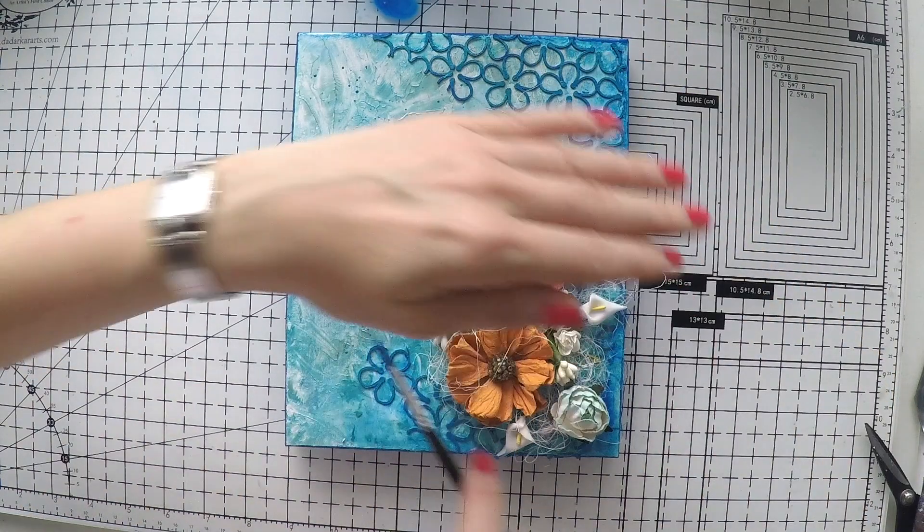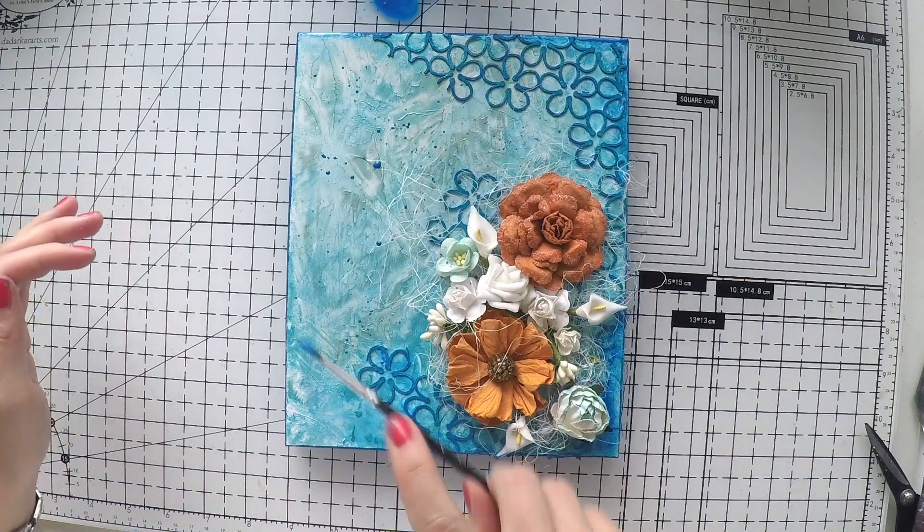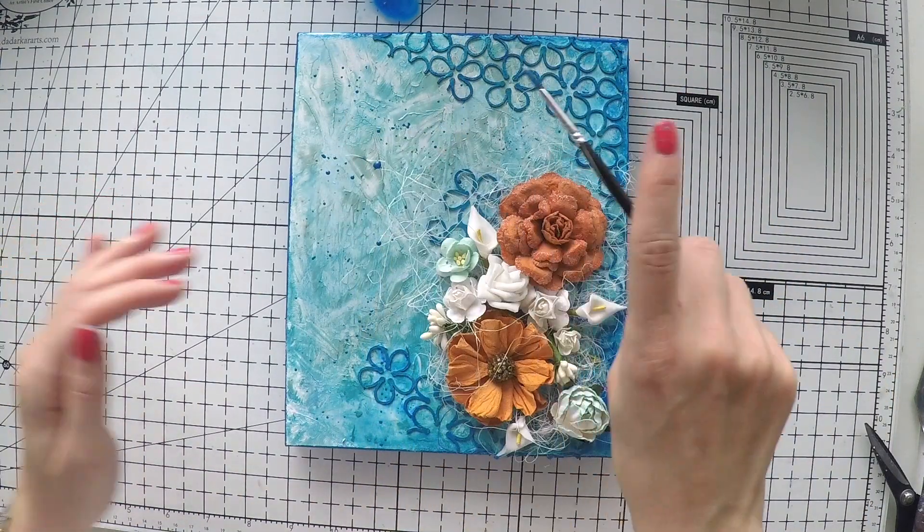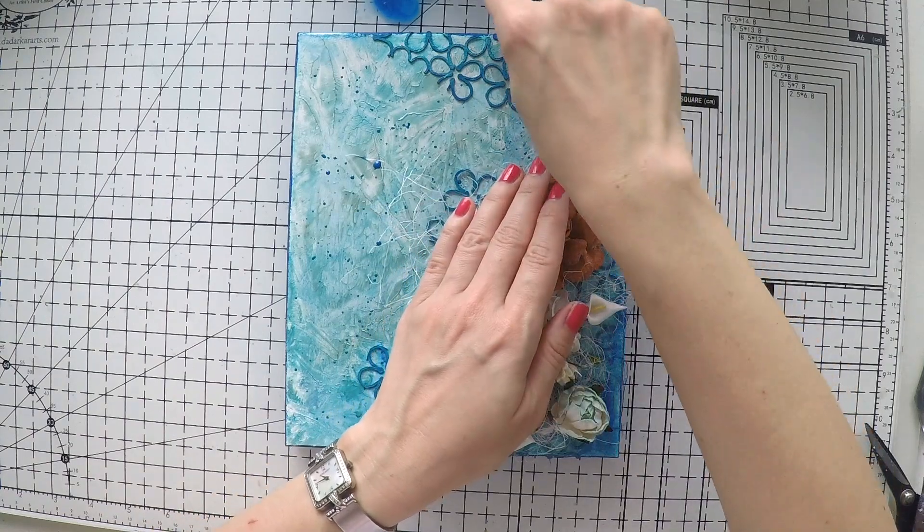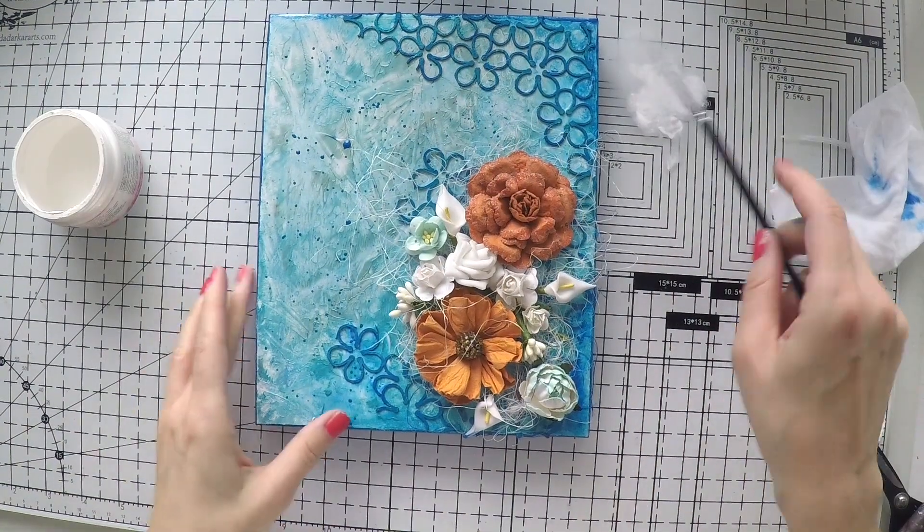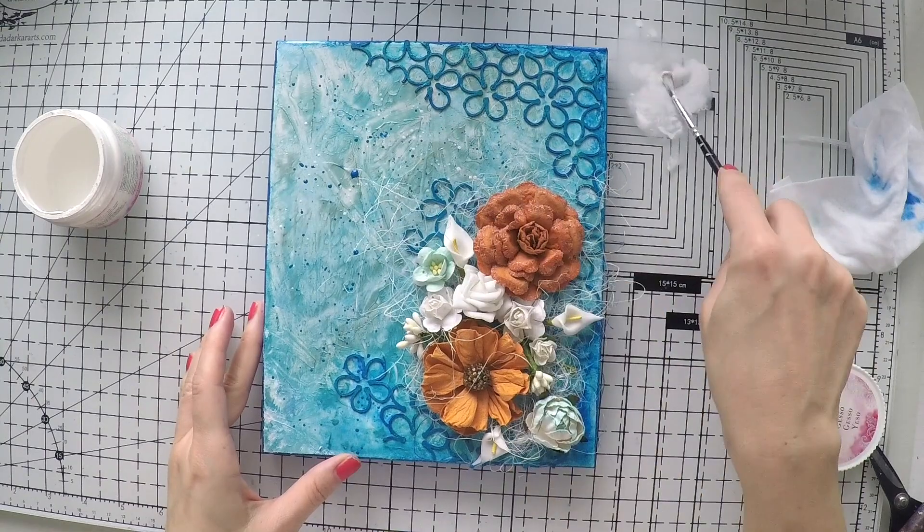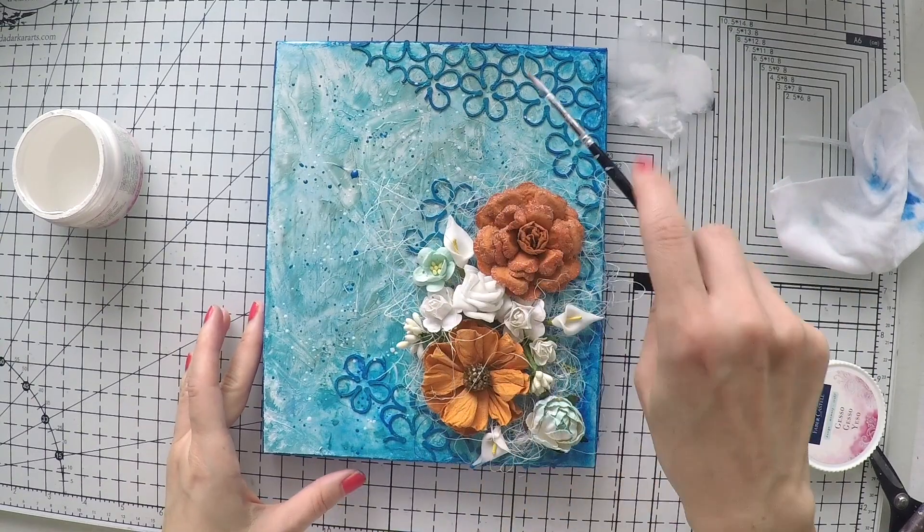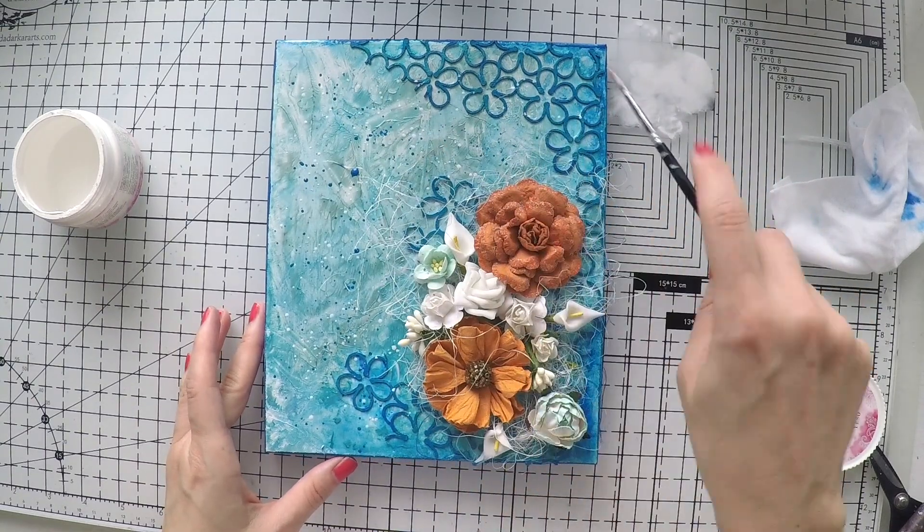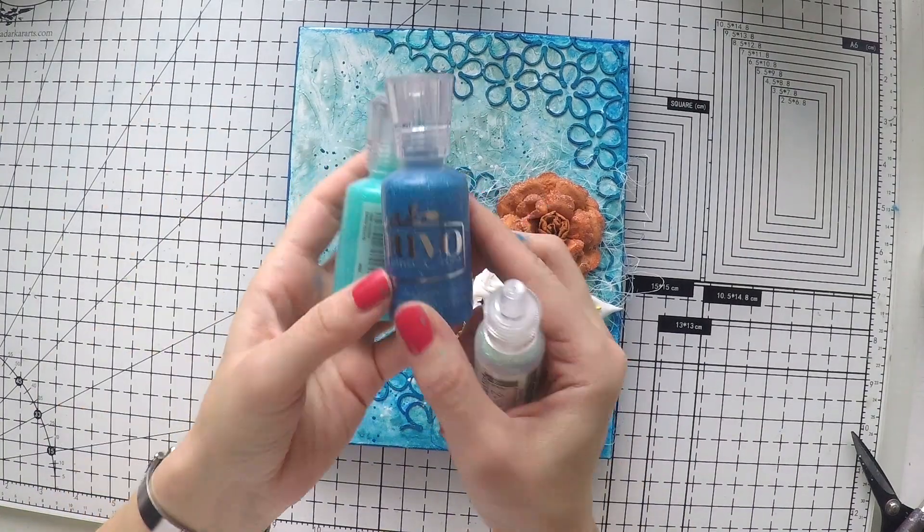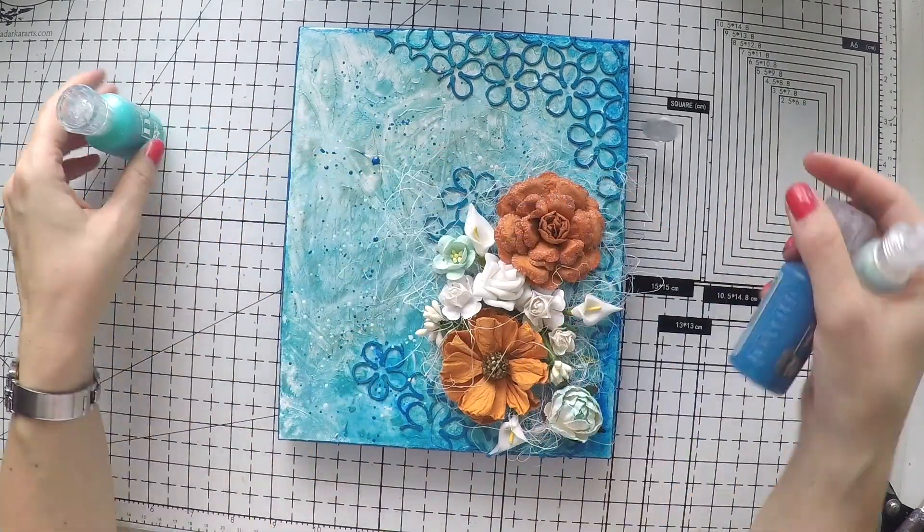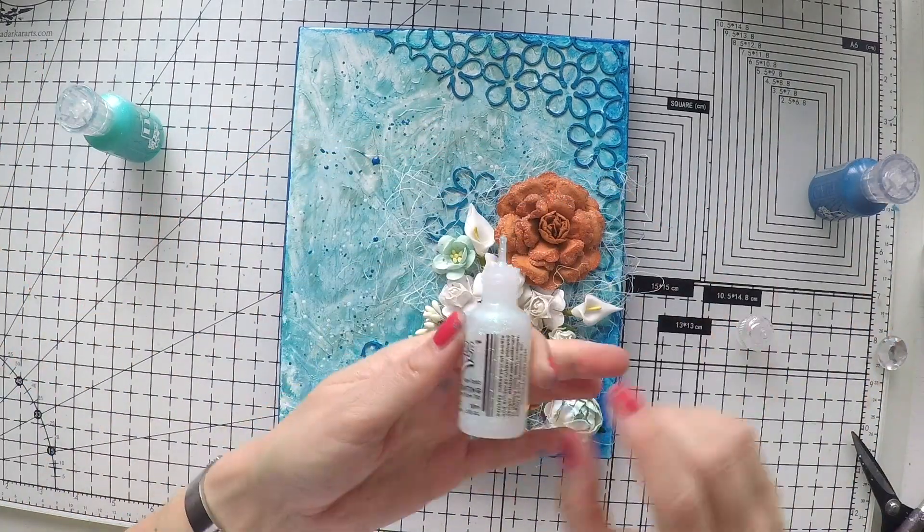I'm going to do some splashes with this sapphire blue as well to bring everything together. These splashes also add some movement, some energy. That is why I love them a lot. And also of course I am going to add some white splashes. I couldn't leave it alone without adding some stickles and some dimension.